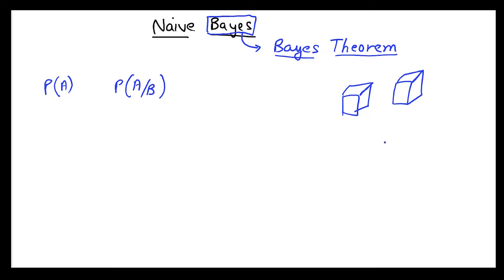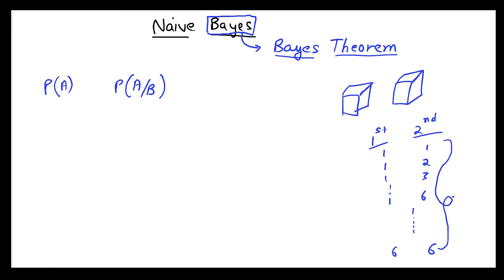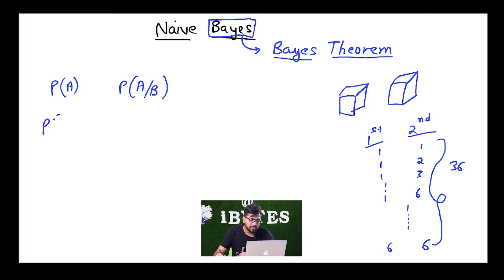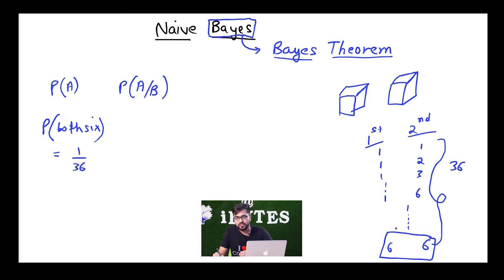What are the total number of outcomes — the sample space? If I have a first dice and a second dice, I might have 1-1 on both, 1-2, 1-3, and so on up to 6-6. So basically there can be 36 possible outcomes. If someone asks me what is the probability that both are going to be 6, I can clearly say the probability is going to be 1/36, because out of 36 outcomes, there is only one favorable outcome which has 6 on both. So P(both 6) = 1/36.